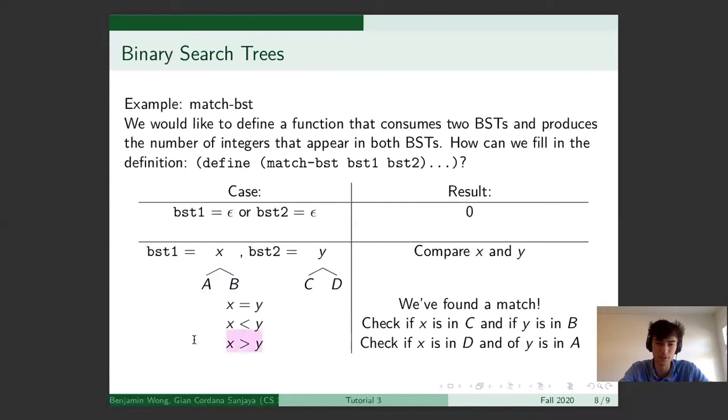For the reverse inequality, the last case, X greater than Y, we need to check the opposite trees. So X can only now be in D, and Y can only now be in A.